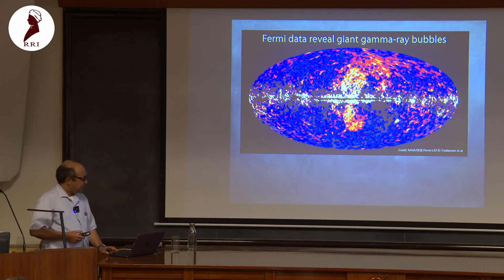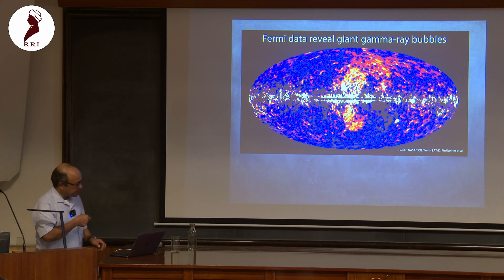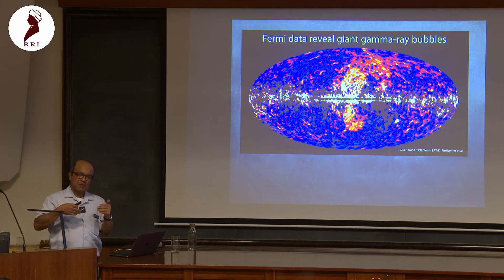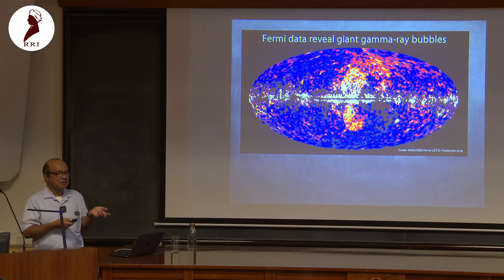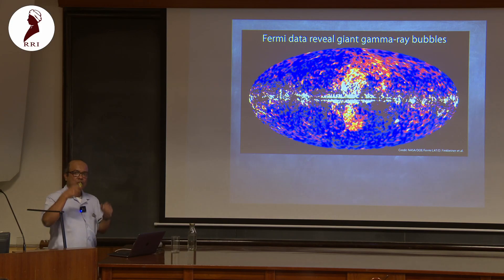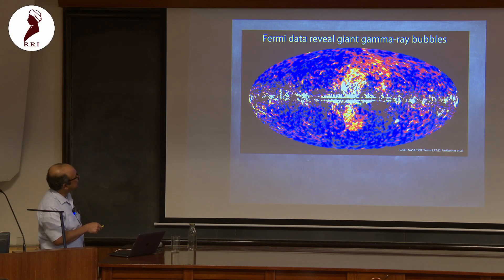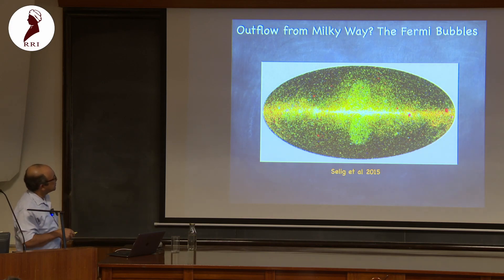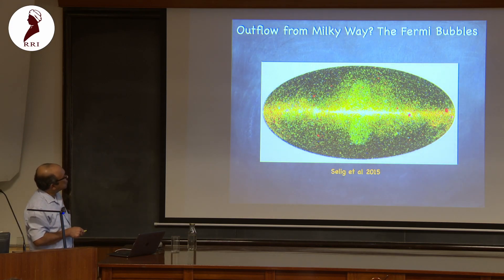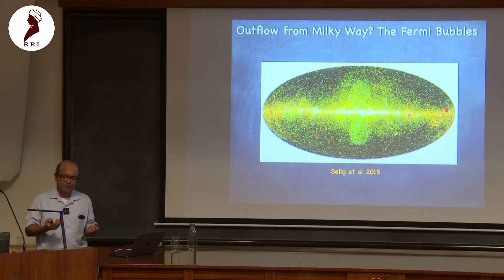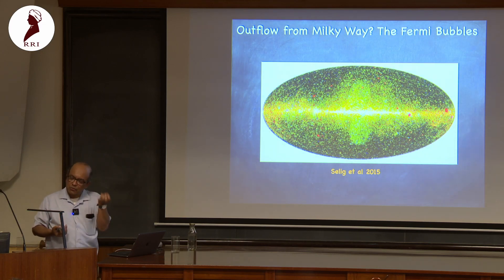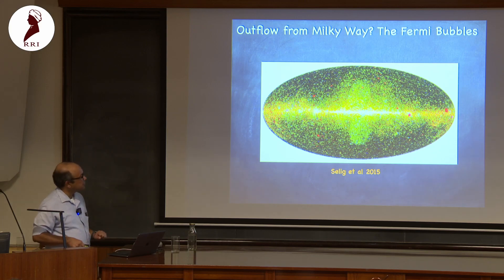Even in our own galaxy there are signs of outflows. This is a gamma-ray map of the Milky Way from our vantage point showing bubble-like features — the Fermi bubbles. This better map has noise subtracted. These are discussed as signatures of the effect of star formation in the central region of the Milky Way.